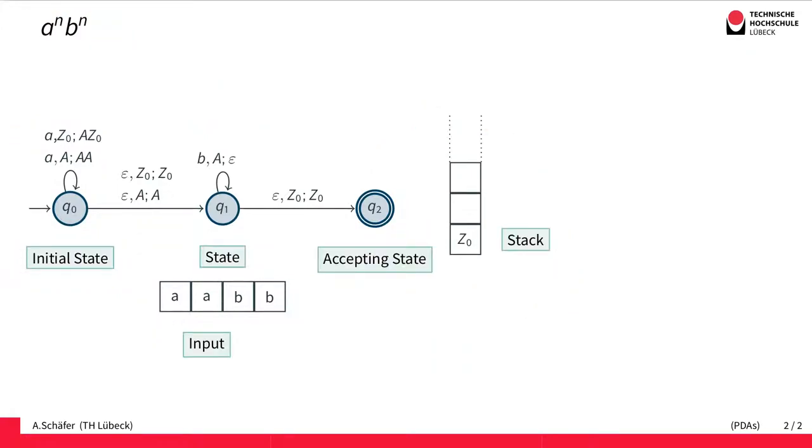Now let's zoom in more. We have an initial state in the control, arbitrary states, and accepting states. Here we have the stack, and we have some input which we write next to the automaton, though it's not actually part of the automaton itself.